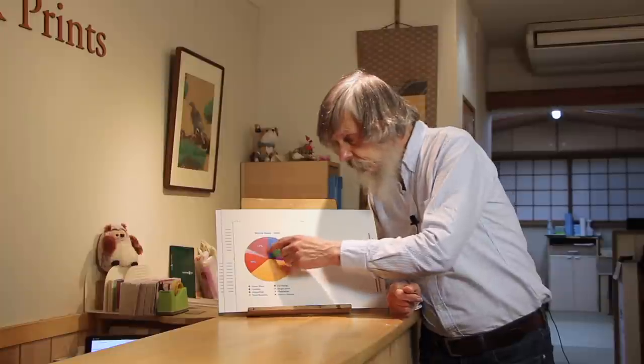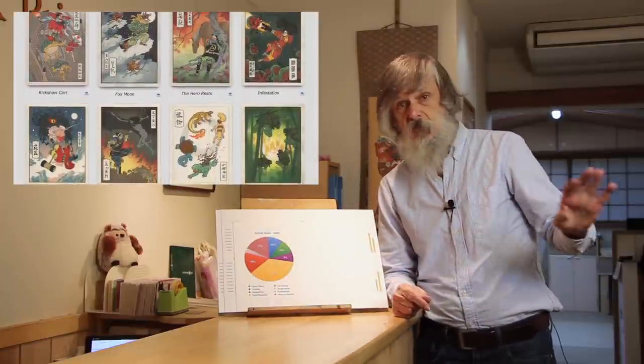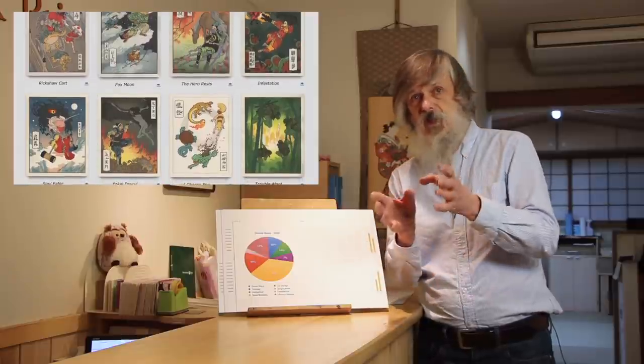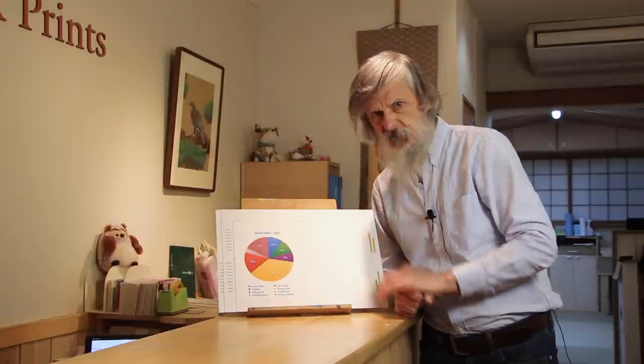To round it off, this 17% segment is Ukiyo-e Heroes prints, which we ourselves don't sell directly, but supply to Jed Henry, and he does them online and in conventions and comic cons. All in all, this represents a pretty good balance of categories, with one pink exception.